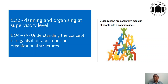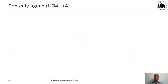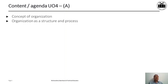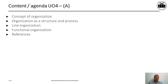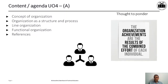Organizations are made up of people — not animals or machines. Animals form herds but they do not form organizations; they come together for survival, not to achieve common goals. The content of this part covers: the concept of organization, organization as a structure and process, line organization, and functional organization.